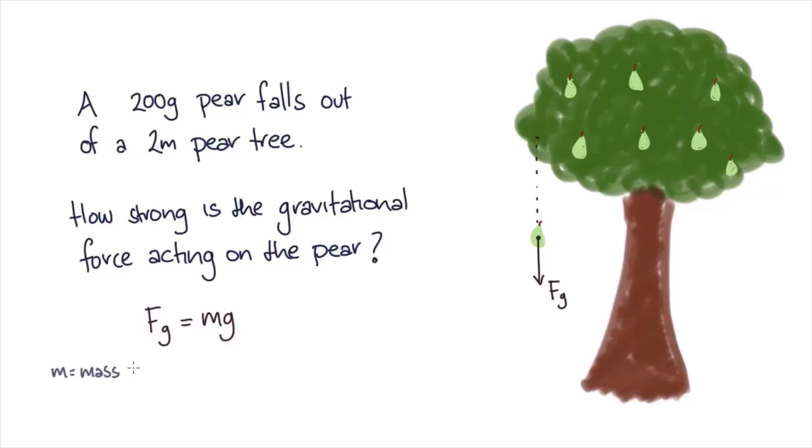We know the mass is 200 grams and little g is the acceleration due to gravity which is 9.8 meters per second squared. So Fg equals 0.2 times 9.8 kilogram meters per second squared, which is equal to 1.96 newtons.